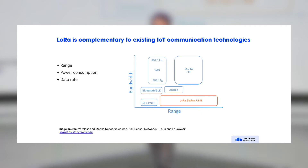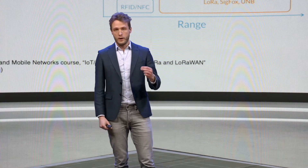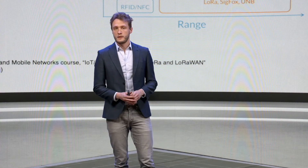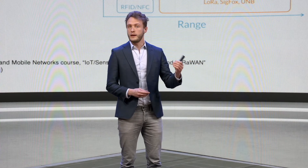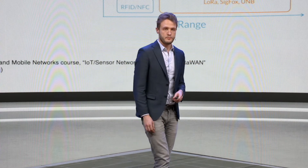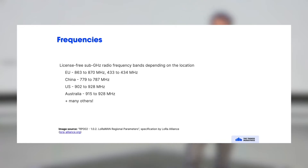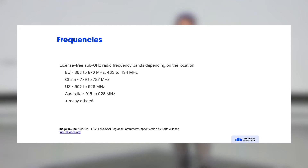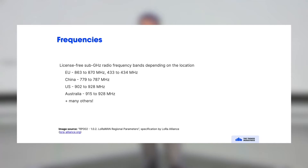That really makes LoRa complementary to other IoT technologies — it's not a replacement. In fact, we also see devices that both have a Wi-Fi transceiver as well as LoRa, and only enable Wi-Fi if they need high throughput. LoRa can be used in a license-free spectrum, but the license-free spectrum is not globally harmonized. It's not like Wi-Fi at 2.4 and 5 GHz, which is globally harmonized. Unfortunately, that is not the case with sub-gigahertz frequencies.